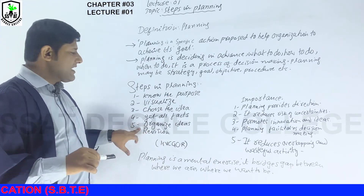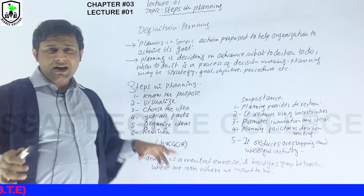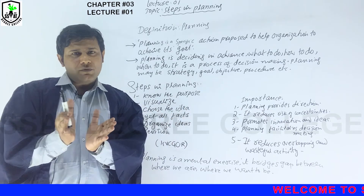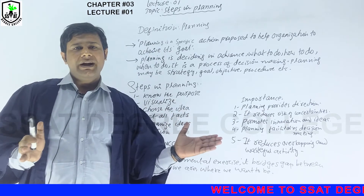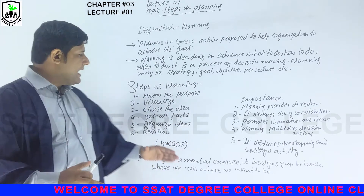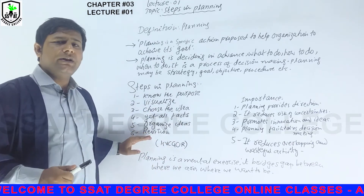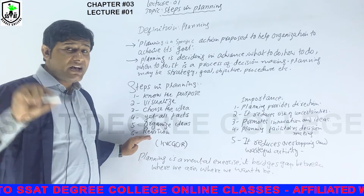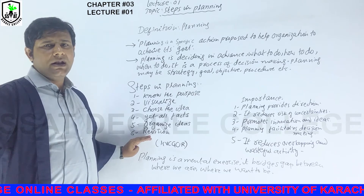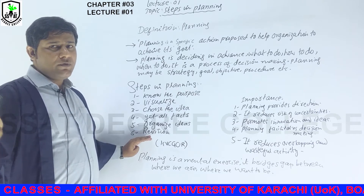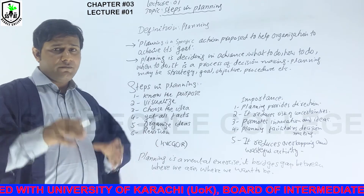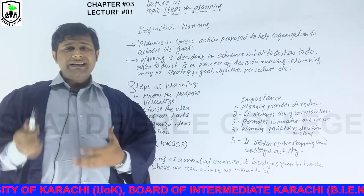And later on, organize ideas. We have to organize all the ideas, we have to plan something — the different ideas we have to organize, jot down the important ideas and unimportant ideas we have to cut out. And later on, we have to organize the ideas. And in the end, it's revision. Before transmitting the message to the receiver — whatever it may be, a sale, a goodwill, an inquiry — we have to revise, proofread, write it down, jot it down, plan it, and revise it.